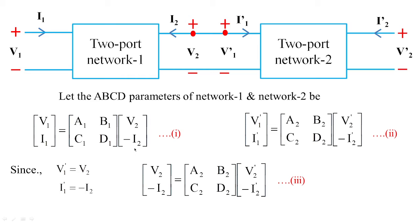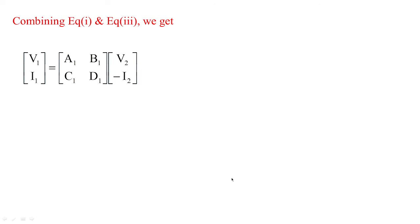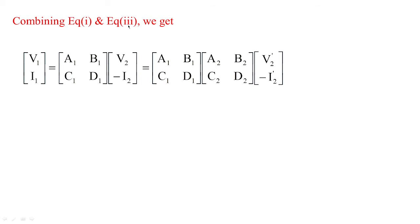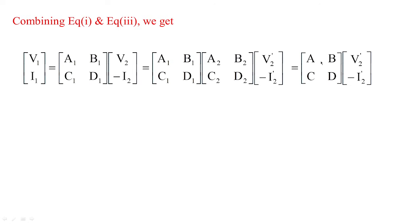Now let us combine equations 1 and 3. We have V1 and I1 in terms of V2 and I2, and I replace V2 and I2 from equation 3 whose values involve A2, B2, C2, D2 applied to V2' and minus I2'. Relocating A1, B1, C1, D1 and A2, B2, C2, D2 as the ABCD parameters of the cascade connection.